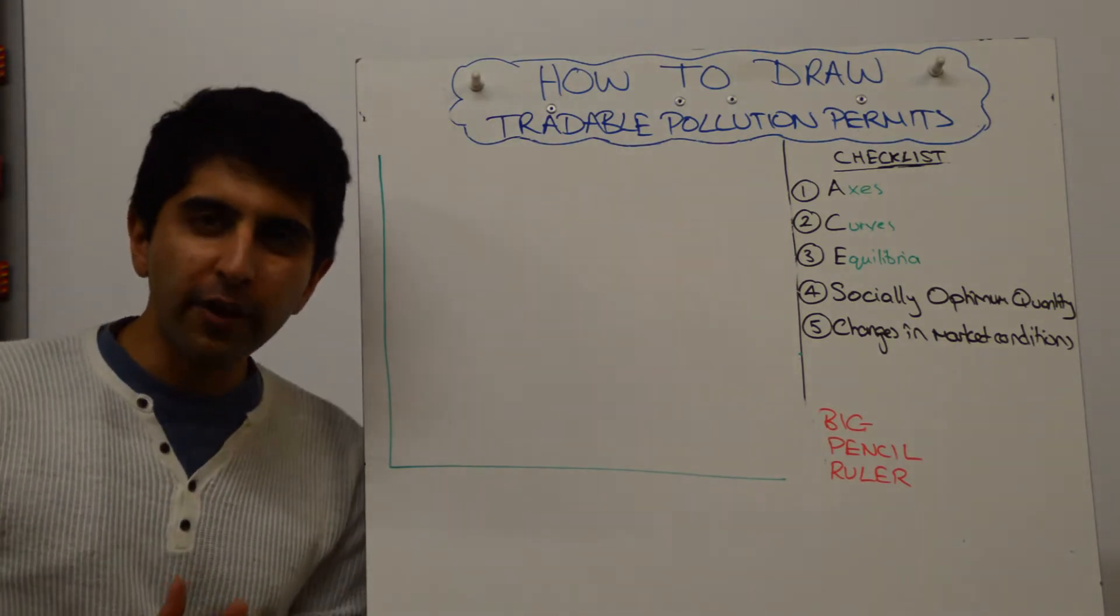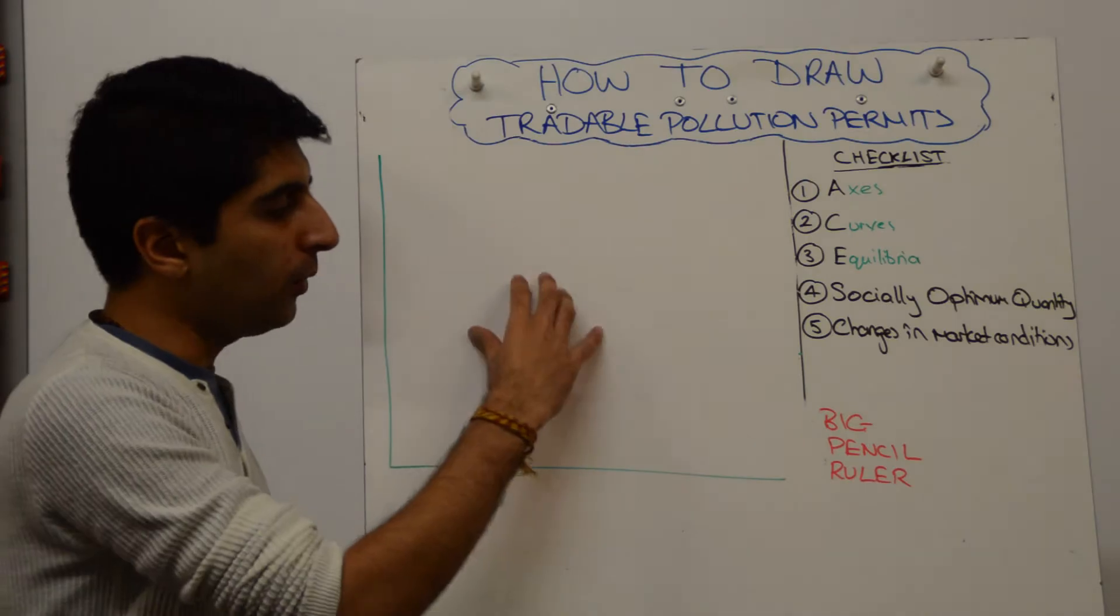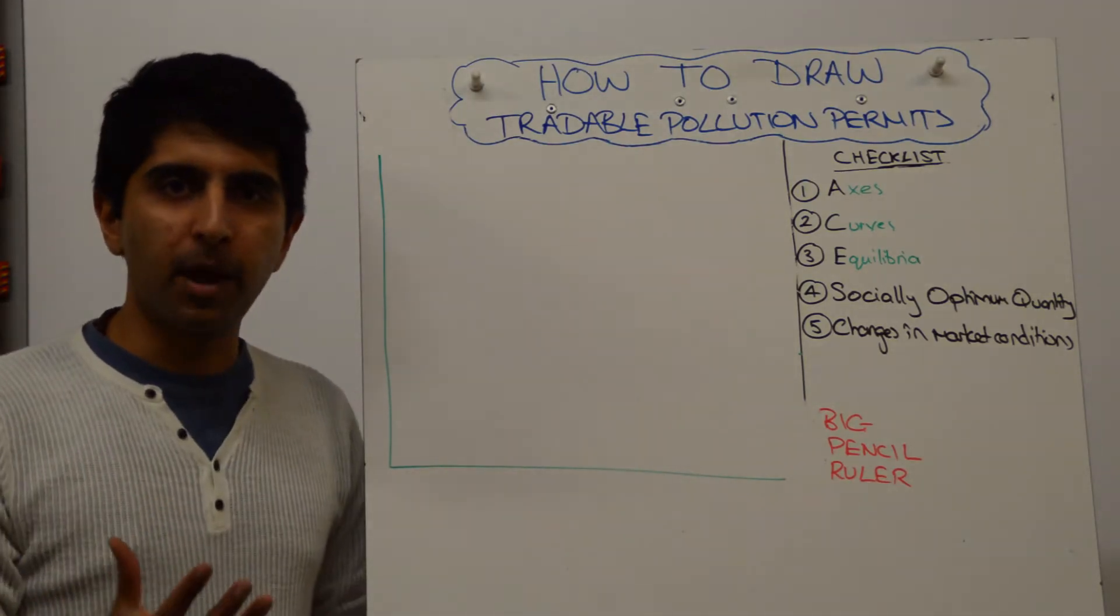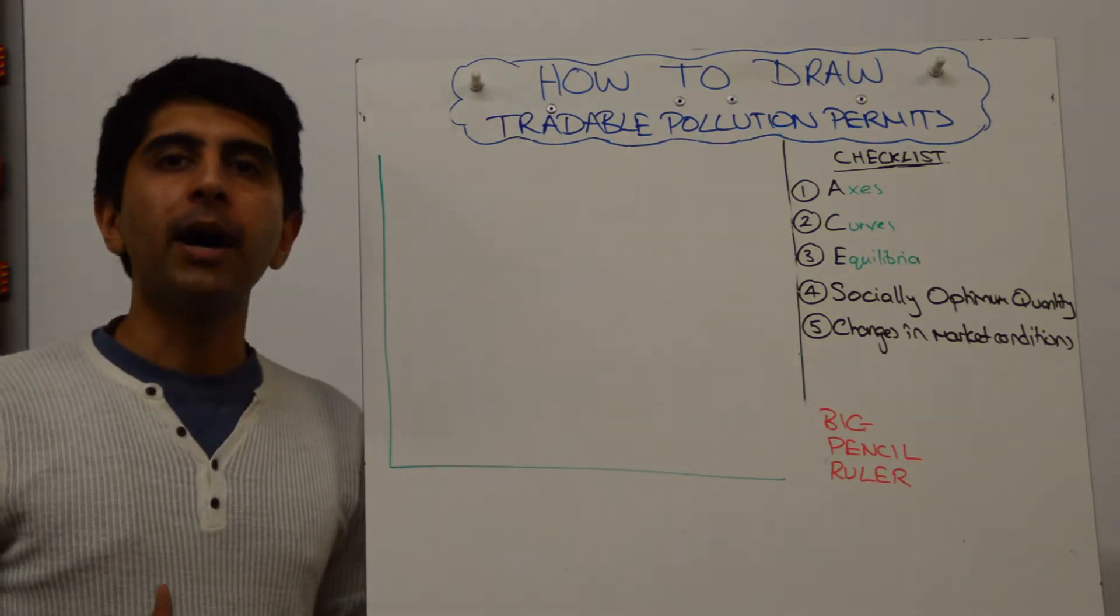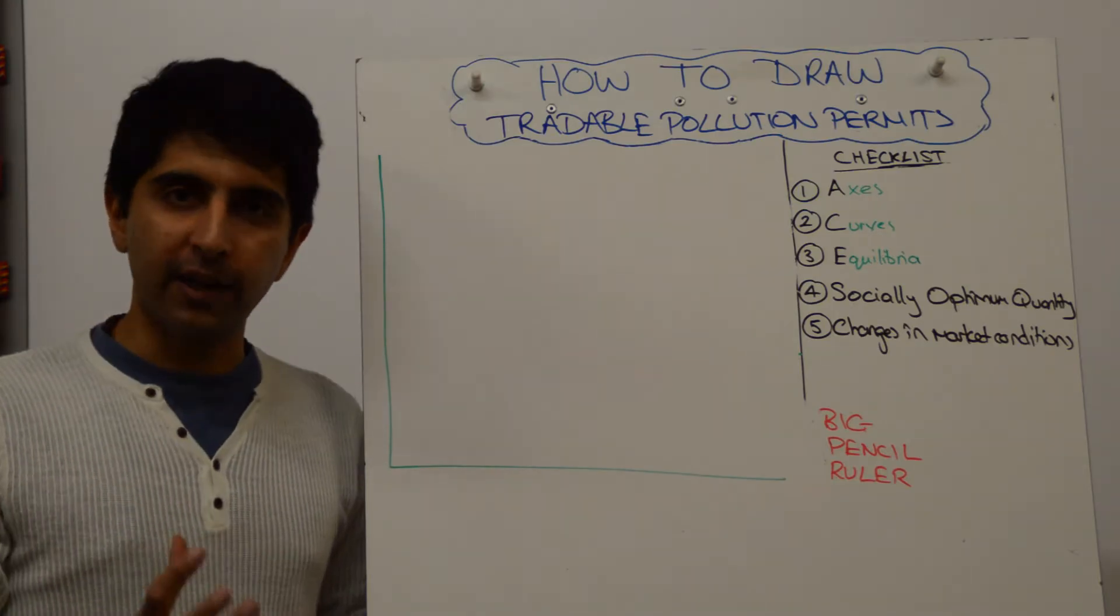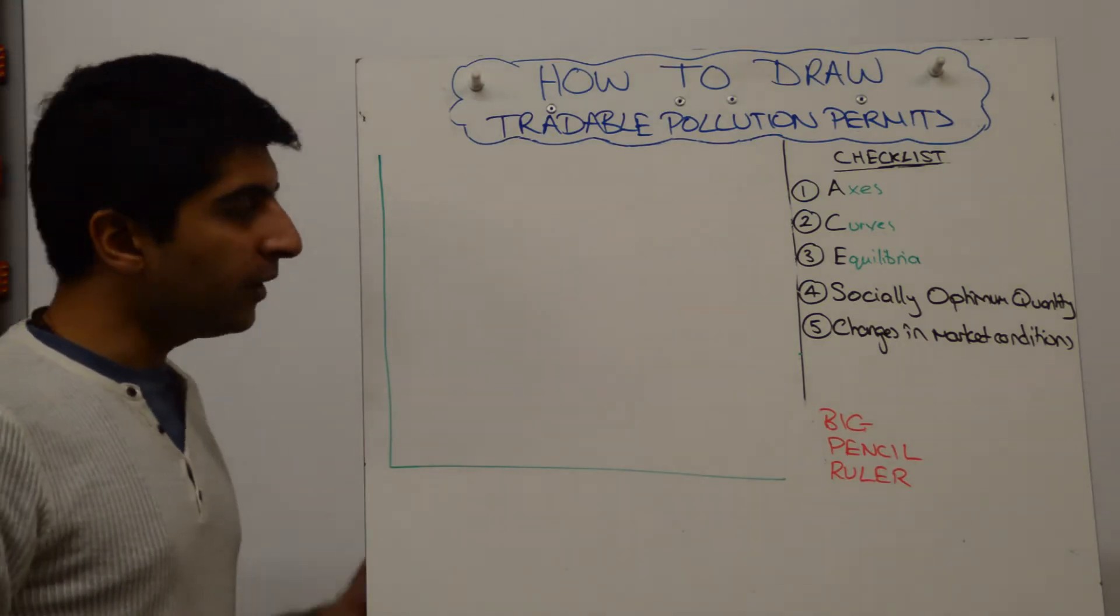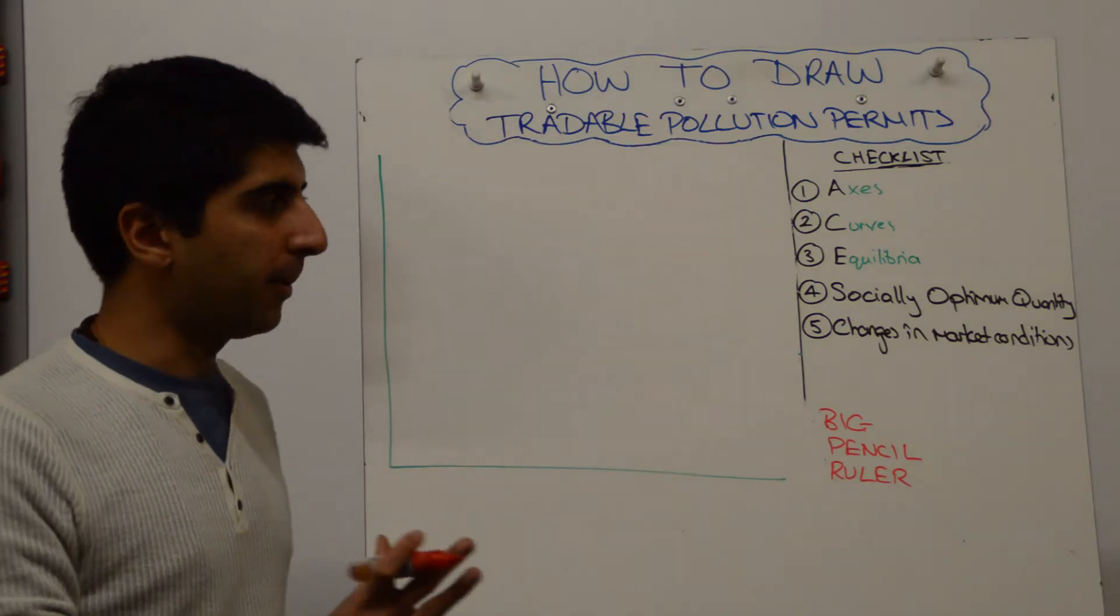If you've got a question on this, what diagram do you draw? Well, I would go straight into the market for permits and how in that market we can show a market failure being solved. To start with, all we need to draw is the market for permits.